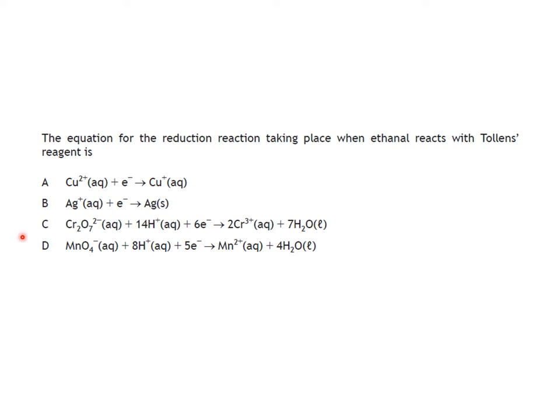Last one. Tollens reagent - if you go back to last lesson you should have come across the fact that Tollens is to do with the reduction of silver plus ions. Ag+ ions gain an electron and are reduced, forming solid silver, which coats the mirror in the silver mirror test.